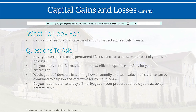Capital gains and losses appear on line 13, indicating the client or prospect aggressively invests. A good question: are you happy with how that investment is done? A fixed index product might be of interest with a portion of retirement assets because you don't have to risk the principal but can still participate in some market growth. Permanent life insurance could also serve as a conservative portion of their portfolio — it doesn't just have to be fixed annuities.